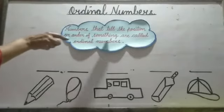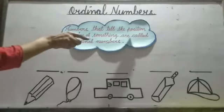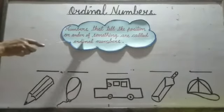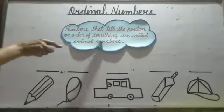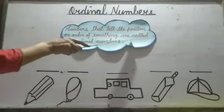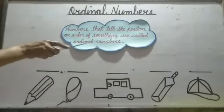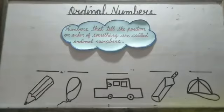Numbers that tell the position or order of something are called Ordinal Numbers. When a number tells the position or order of something, it is called an Ordinal Number.